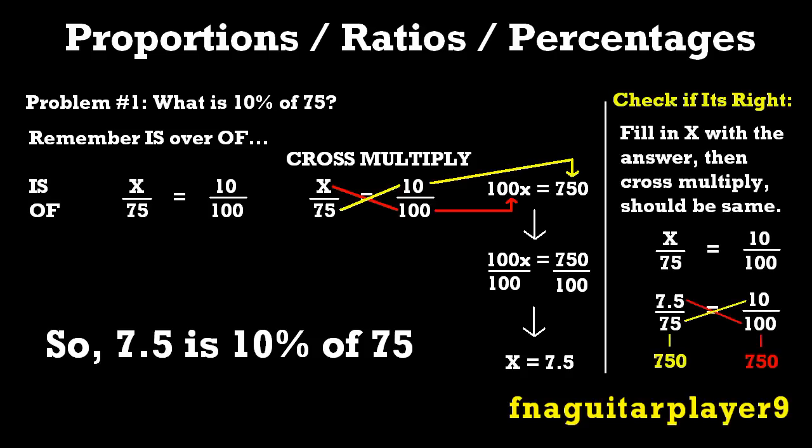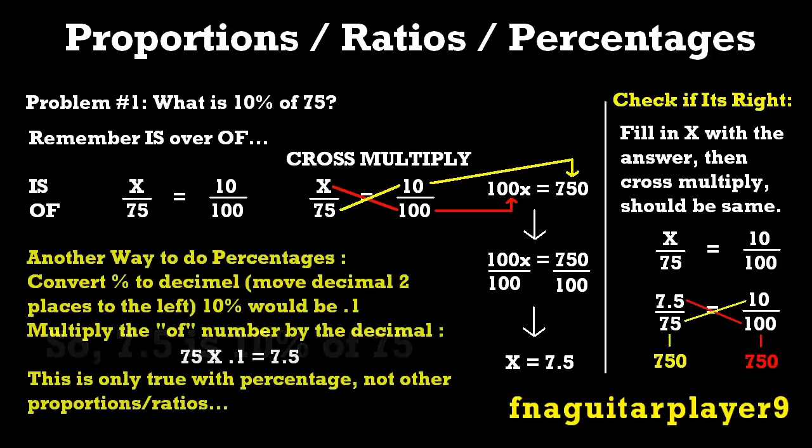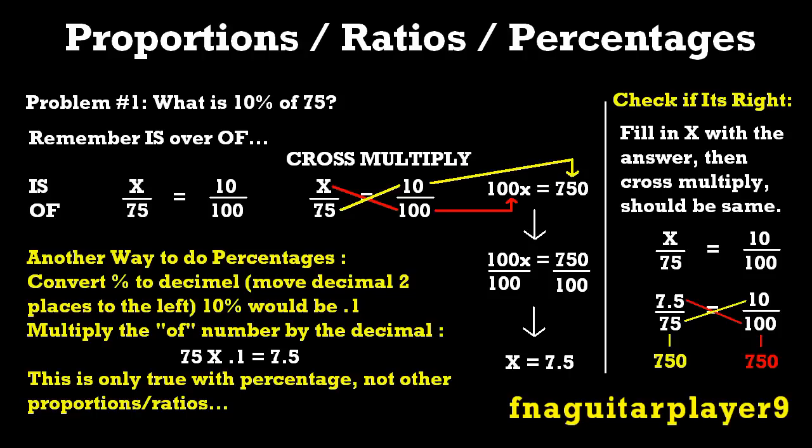And if you look on the right here, I show how to check it. You take your original IS over OF formula, where it has the x over 75. You fill in your answer, where the x would be. Then you cross multiply, and you see you get 750 going both ways. So you know your answer's right. Now if you come out with one higher or lower than the other one, then you did something wrong with your math. Now there's another way you can do this percentage. You can convert your percentage to a decimal. If it's 10%, you move it once, so it would be 1.0. Then you move it again to the left, and it would be 0.1. Then you multiply the OF number, which in this case is 75. You multiply it by the decimal, and you come up with 7.5.